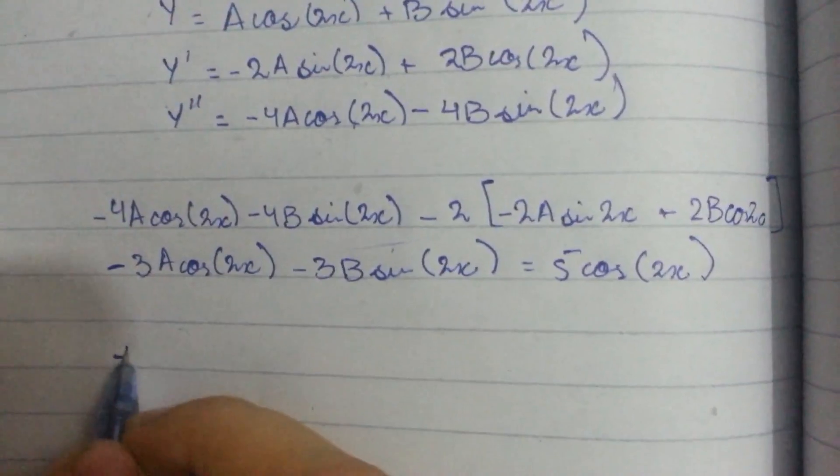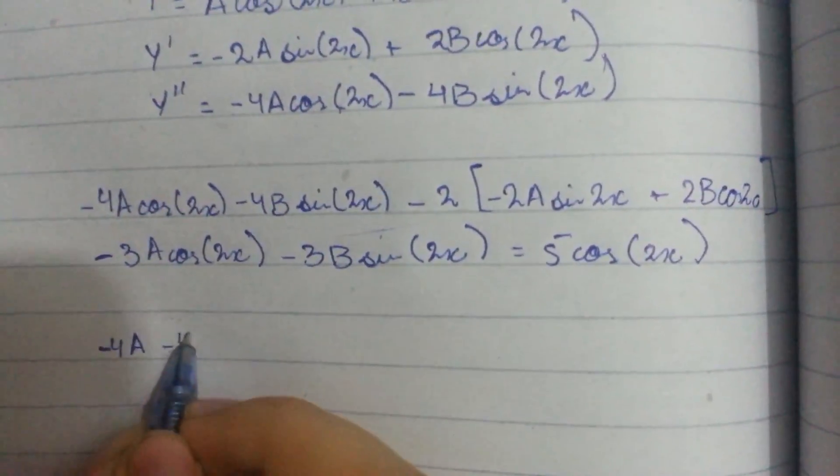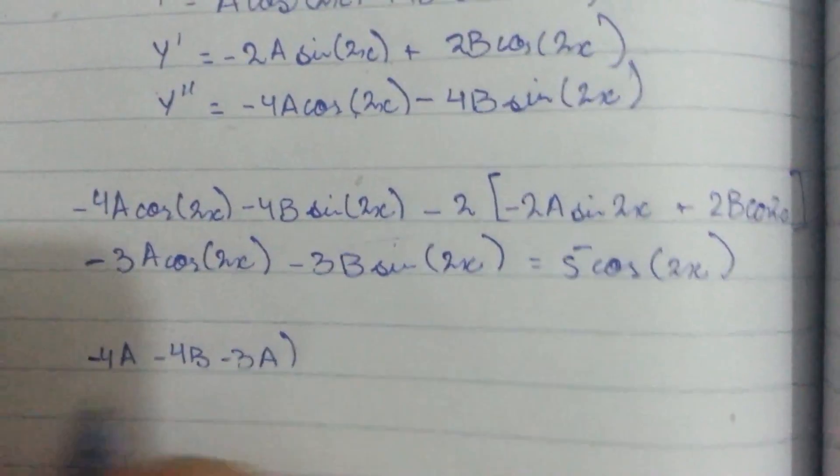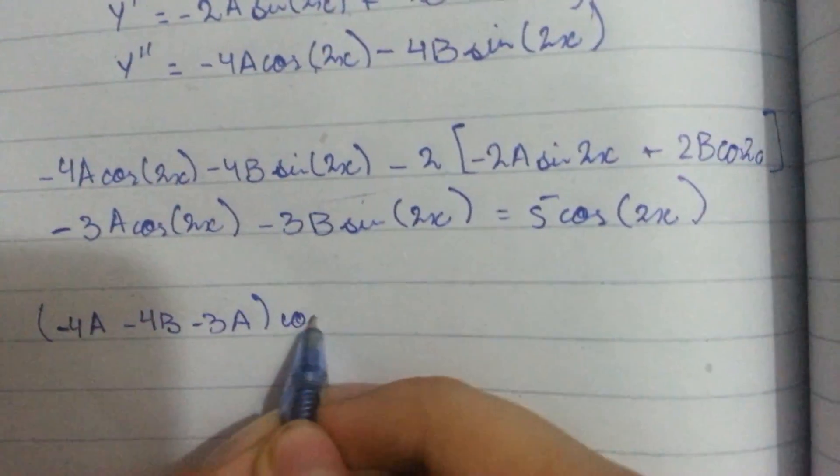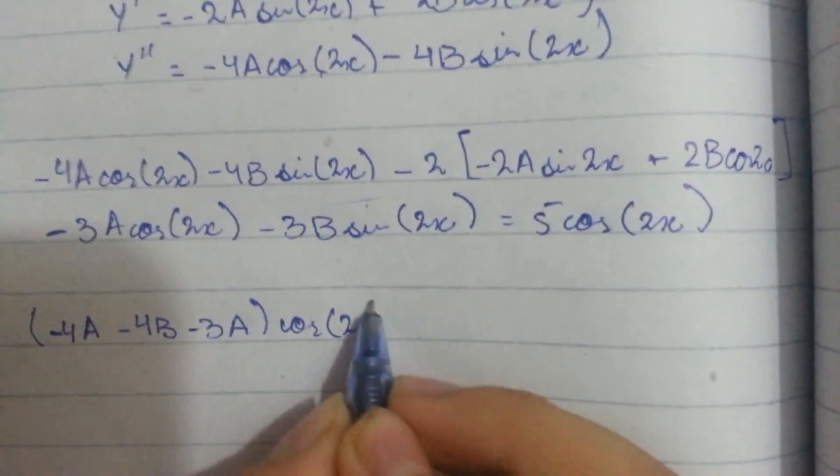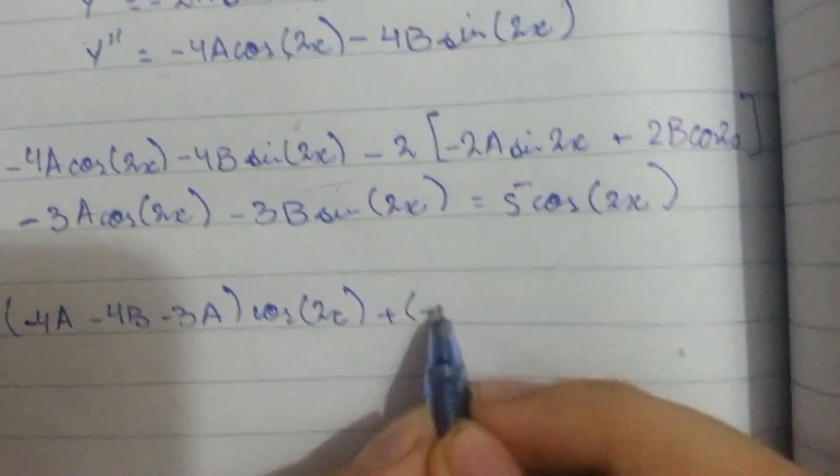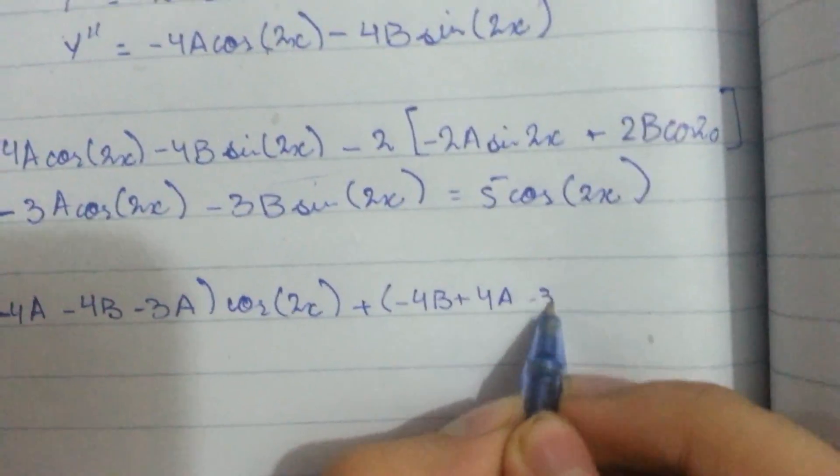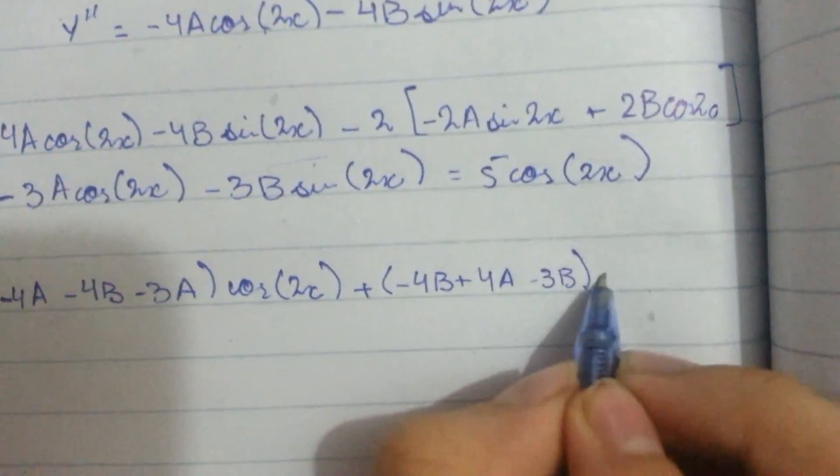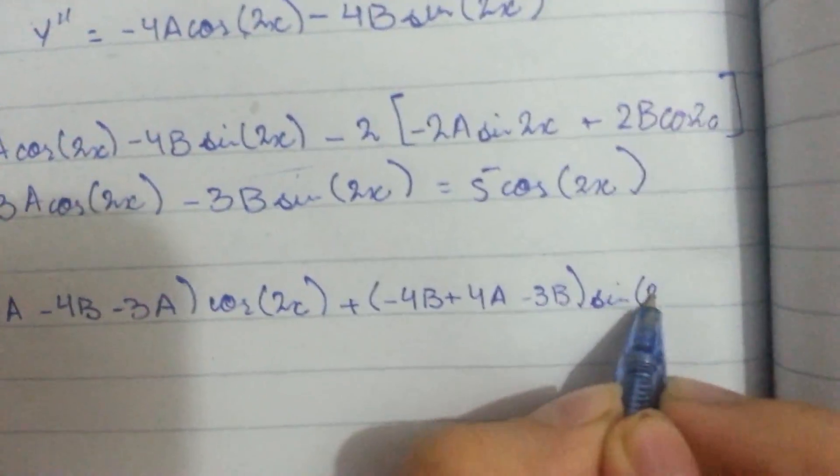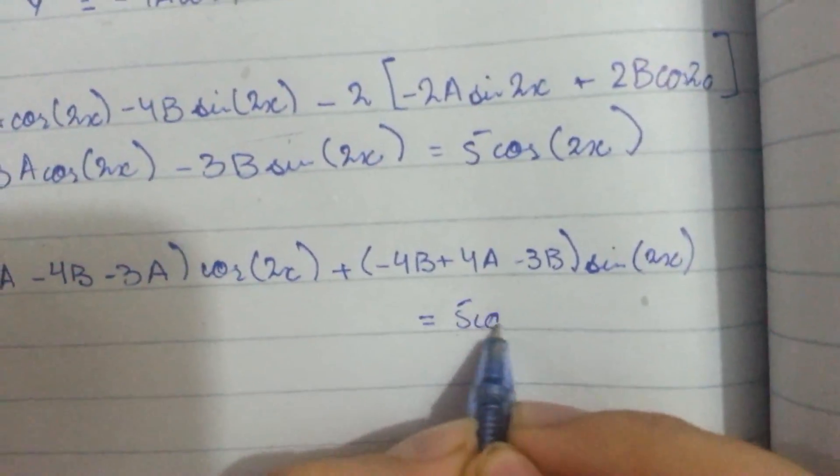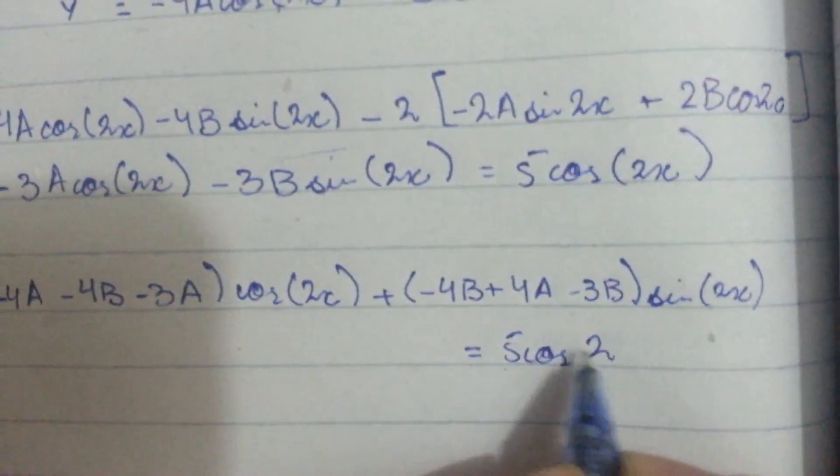After simplifying this we will get minus 4A minus 4B minus 3A into cos 2x plus minus 4B plus 4A minus 3B into sin 2x which is equal to 5 cos 2x.